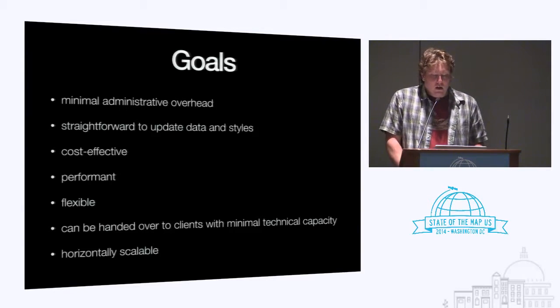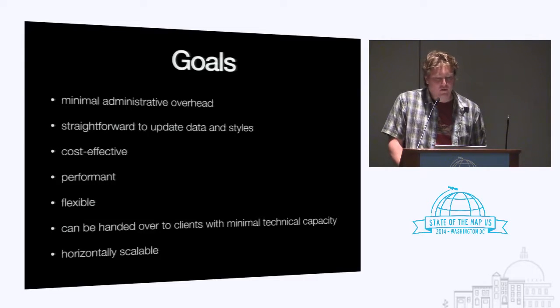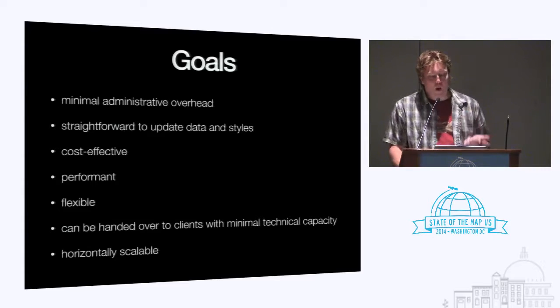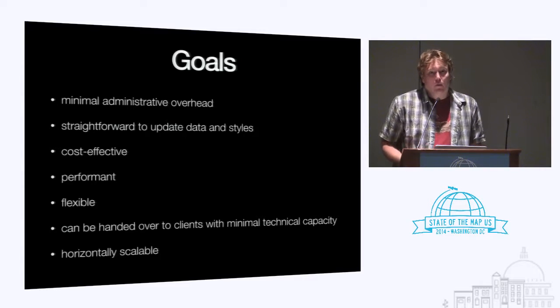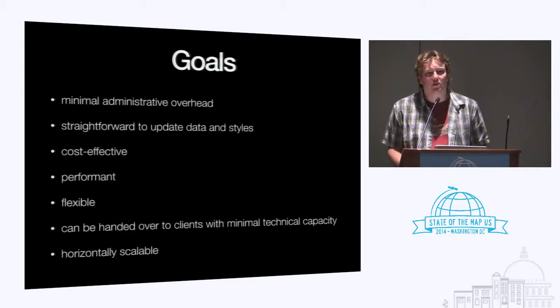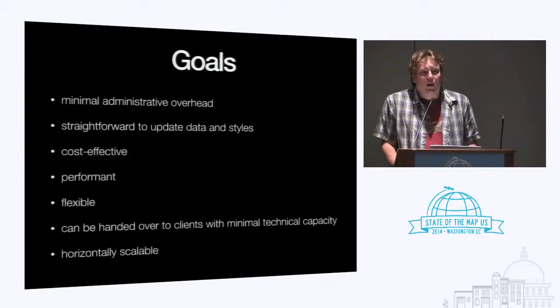Because we're a services business, we need to be both strategic and cautious about how we commit things because they'll directly impact us and our clients. When thinking about infrastructure goals, I started thinking: what has the least administrative overhead? Where is it straightforward to update data and styles? If we're working with a GIS manager mostly experienced in ArcGIS, how can he update data layers and have the map on the website follow fairly closely behind? What can we do that's cost effective? For non-profits, they don't really want to spend more than 50 bucks a month — and the Parks Conservancy map costs them $50.76 a month. It needs to be performant, flexible, and horizontally scalable.